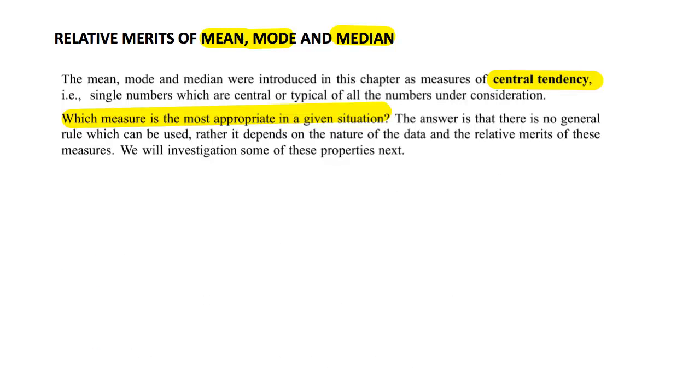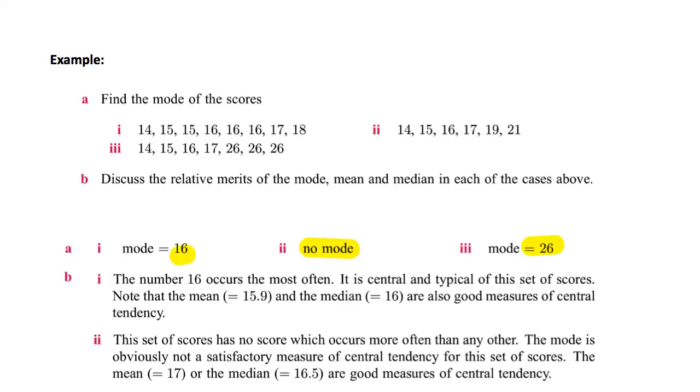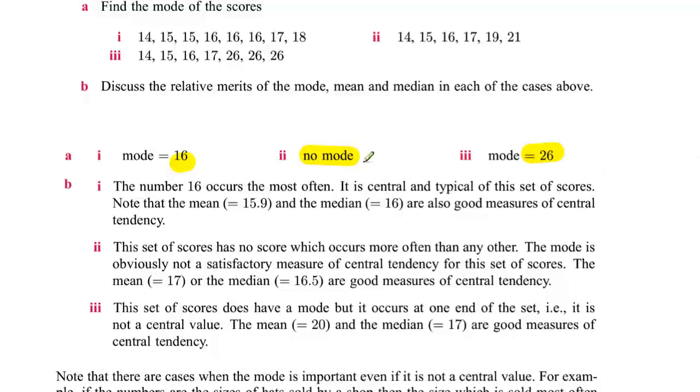Alright, so let's have a look at the first example. What we've got here are three sets of scores and we've got to find the mode of the scores. So we've done this for you, so we're going to do this fairly quickly. The mode for the scores are 16. In this particular case, number two, there is no mode at all - no number that is more frequent than any other. And in this one here it's 26. So the question is to discuss the relative merits of these different modes.